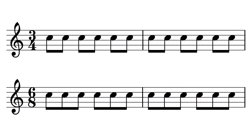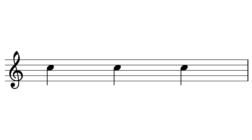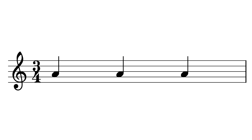One aspect of time signatures that people often miss is the difference between simple and compound time. Simple time is when each strong beat of the bar divides into two equally spaced eighth notes — the eighth notes are grouped into sets of two. 3/4 is what we call simple triple time: it has three strong beats in the bar and each of those strong beats divides down into two eighth notes.